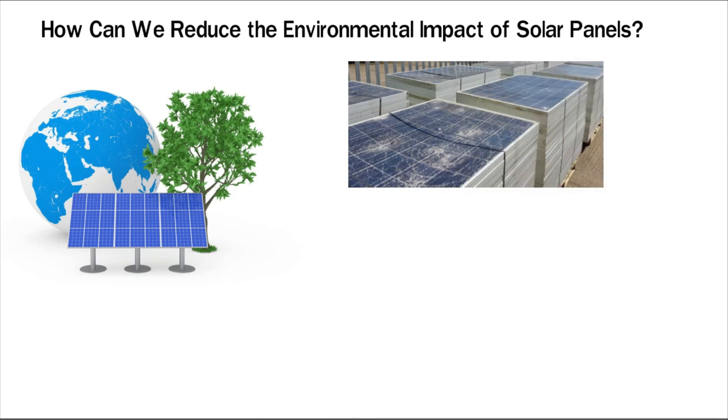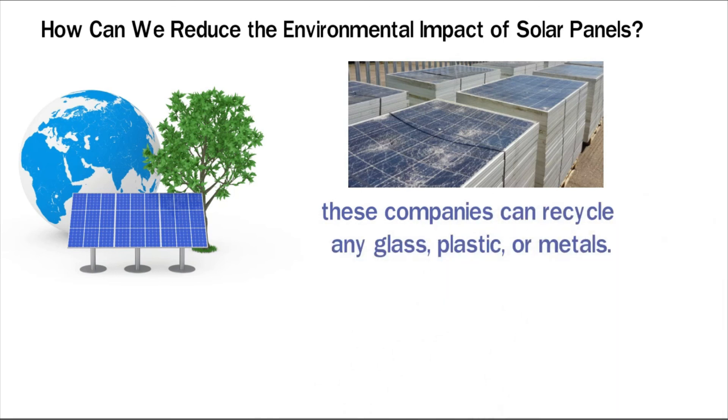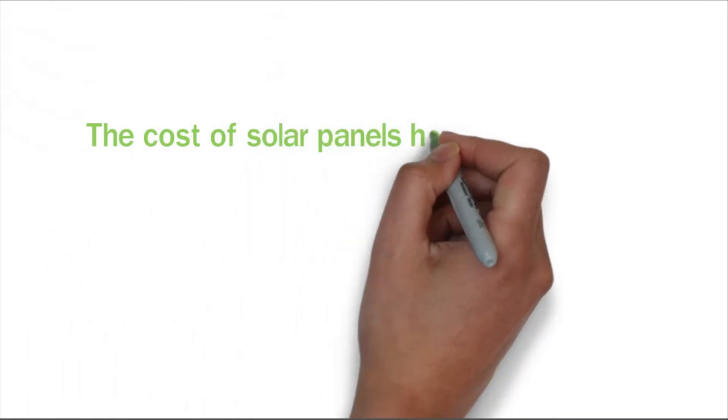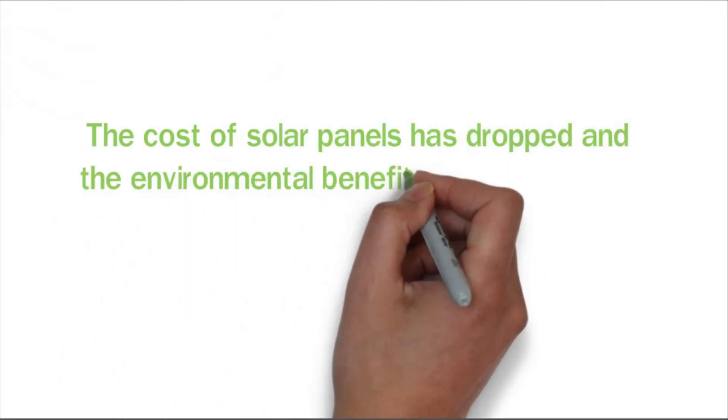Next, these companies can recycle any glass, plastic, or metals. Finally, workers could safely remove dangerous chemicals. This would lower the risk of chemicals polluting soil or water. The cost of solar panels has dropped and the environmental benefits have improved. Overall, they still need to be watched in terms of their costs and benefits.